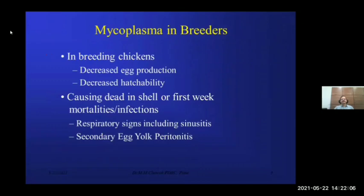In breeders, mycoplasmosis causes decreased egg production and decreased hatchability, causing dead-in-shell embryos or first-week mortalities or infection in commercial chicks. Respiratory signs including airsacculitis and secondary coliperitonitis are also observed in breeders.